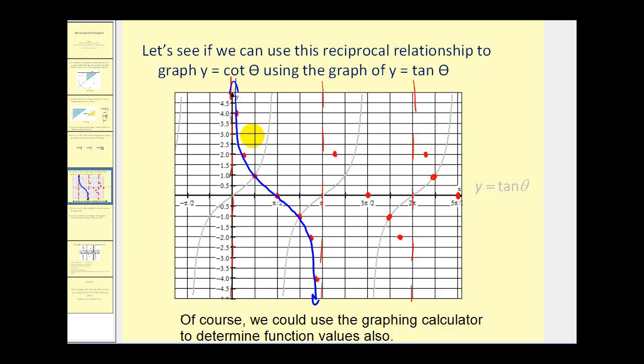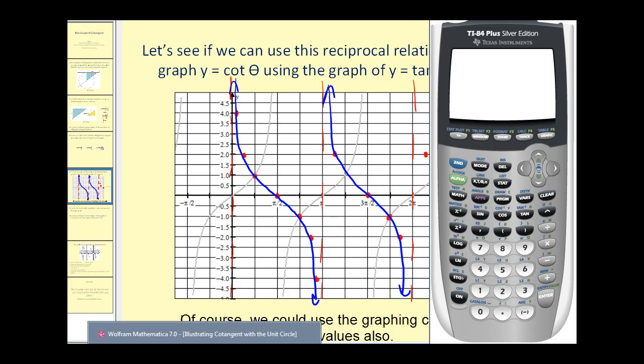Since the period of cotangent theta is equal to pi radians, we'll have a similar graph between these two vertical asymptotes. Of course, if this was hard to follow, you can always pull up your graphing calculator and find function values that way.